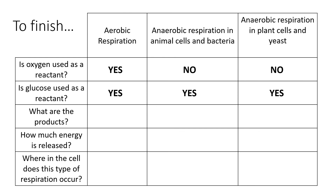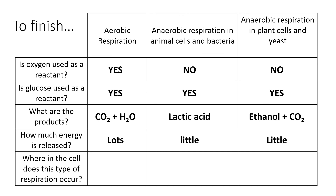What gets produced? In aerobic respiration we always produce carbon dioxide and water. In anaerobic respiration in animals we produce lactic acid. In anaerobic respiration in plants and yeast, we produce ethanol, which is an alcohol, and carbon dioxide. In terms of energy release, aerobic releases a lot of energy — always use the word 'releases', not 'produces', or you will be marked wrong. Anaerobic releases a small amount of energy. Aerobic occurs in the mitochondria, whereas anaerobic, regardless of which type, always occurs in the cytoplasm.